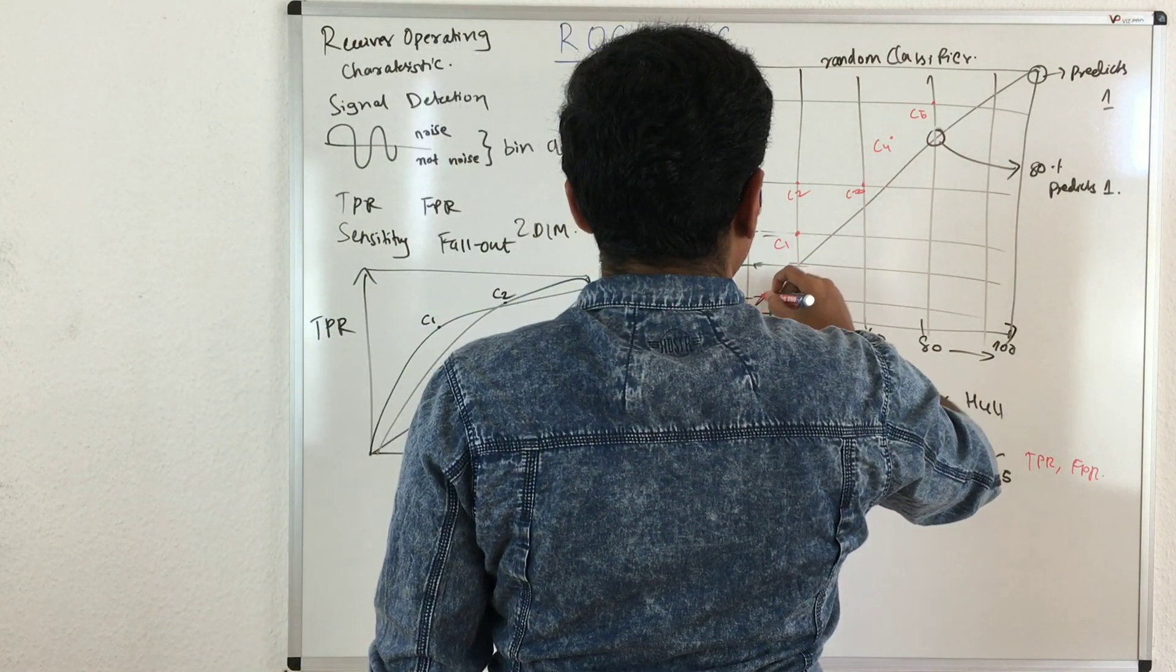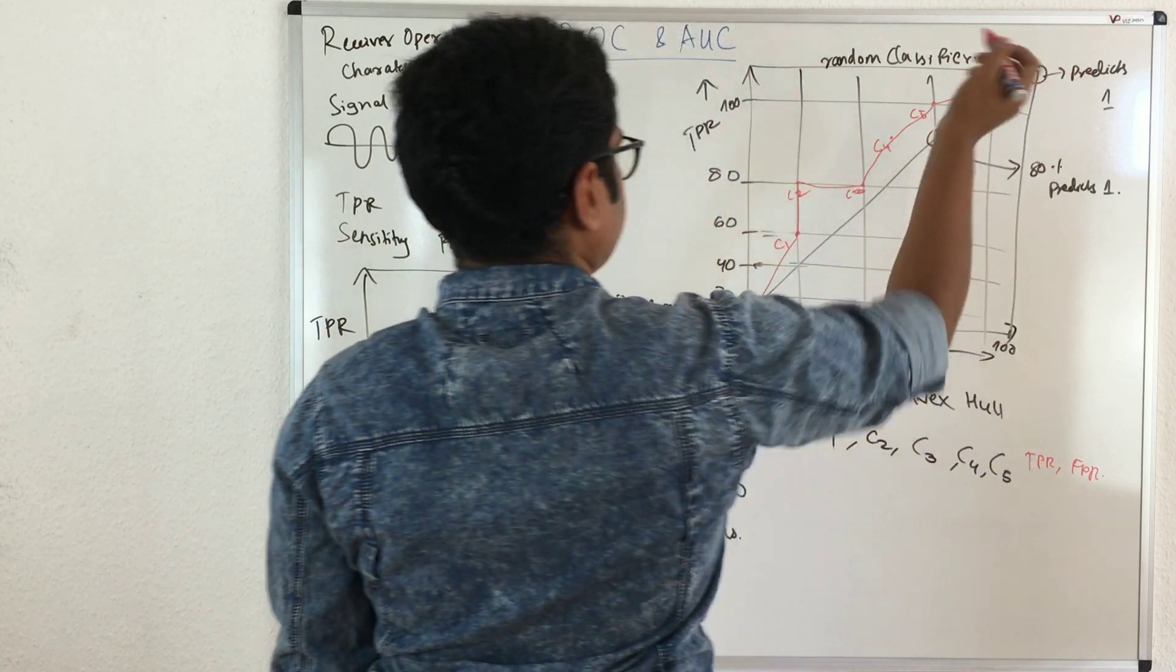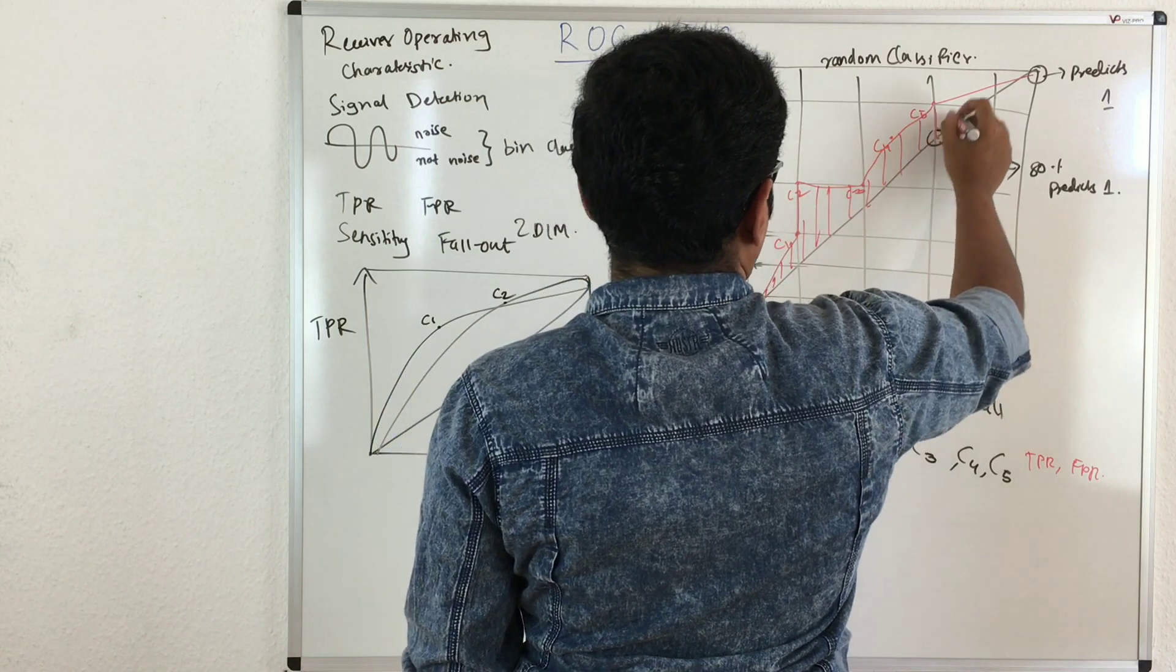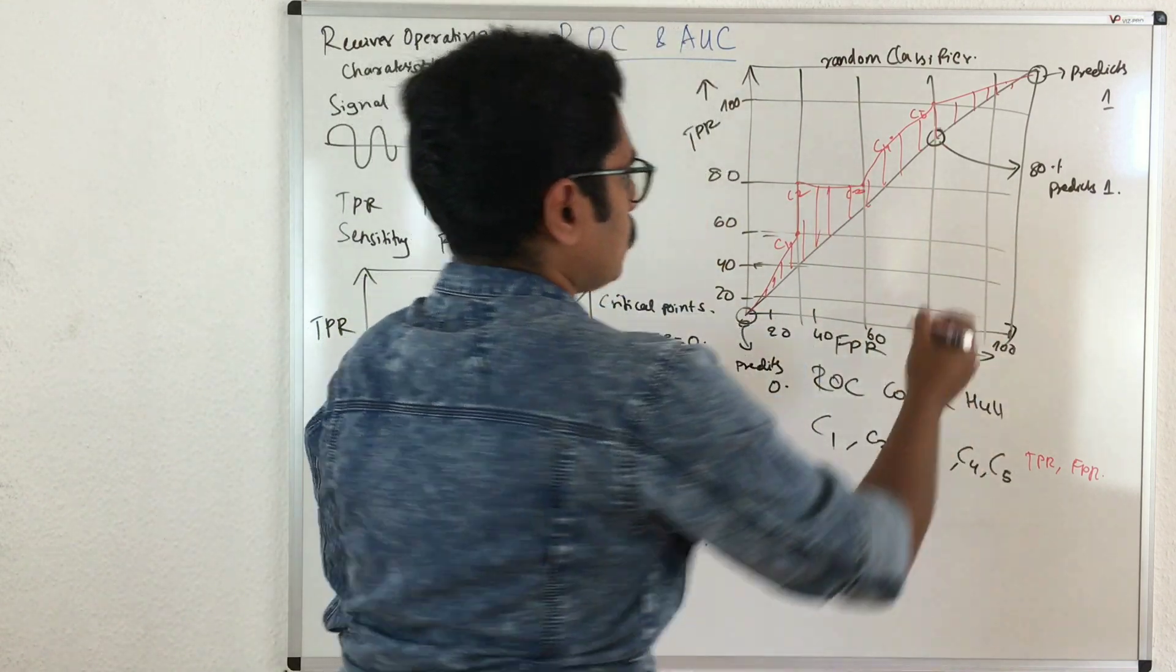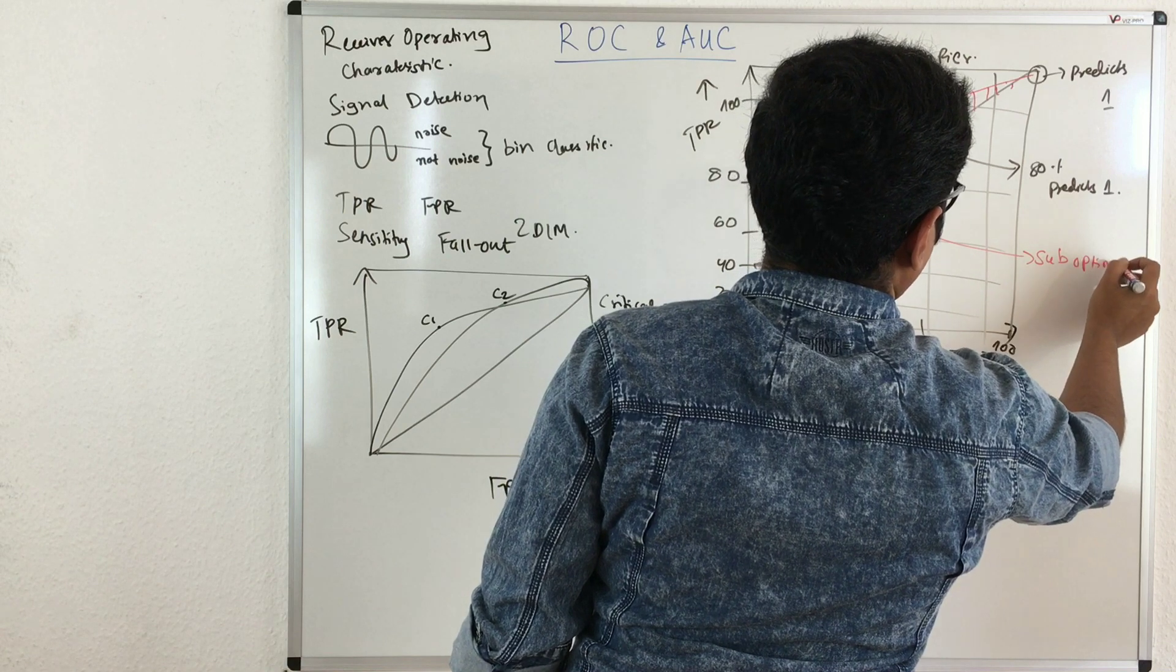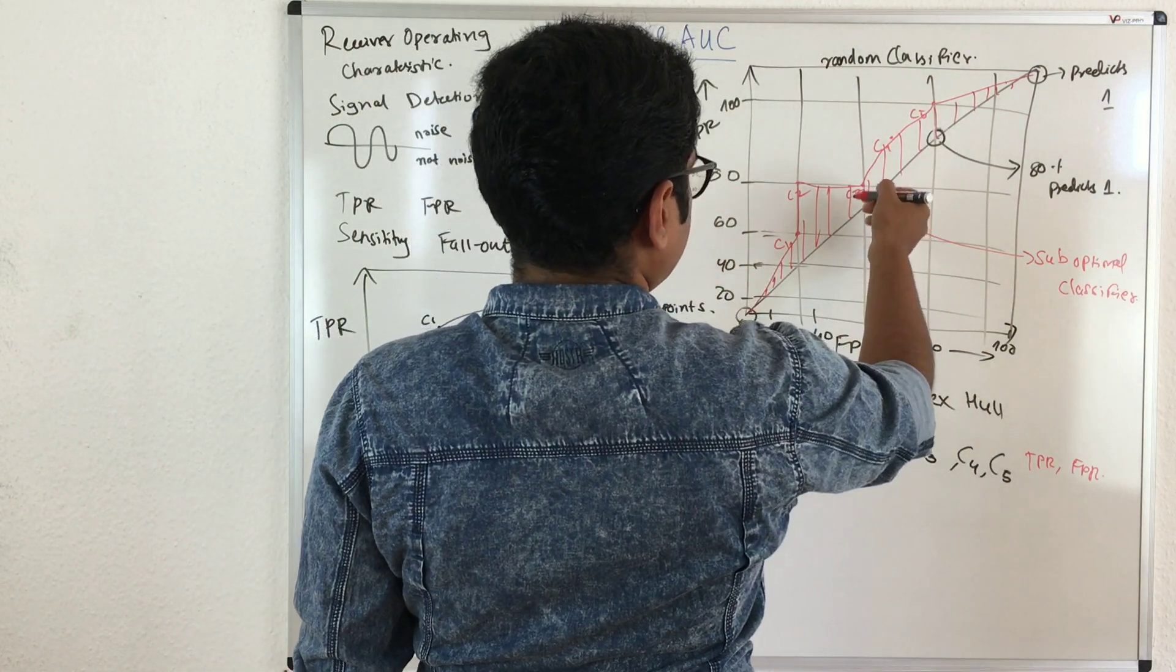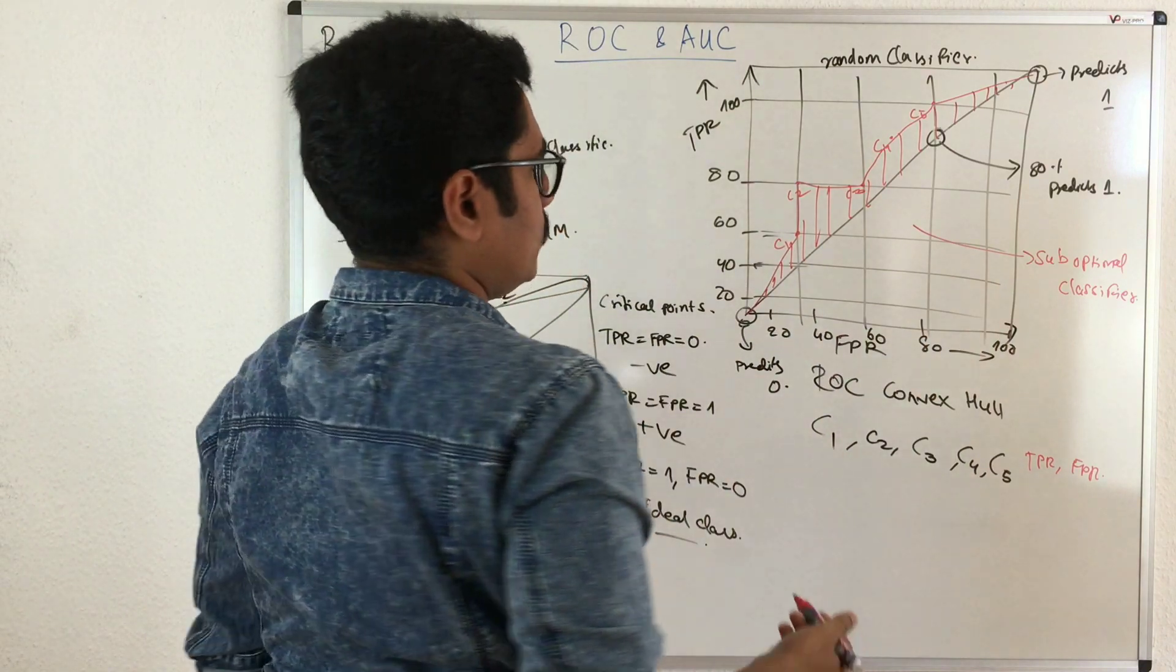Now what we do is join all these curves, and what we get is some kind of a triangle. This curve is called a convex hull. Any point which is below this convex hull is called suboptimal. So that classifier will be called a suboptimal classifier. You can see that C3 is below all this, so C3 will be a suboptimal classifier.